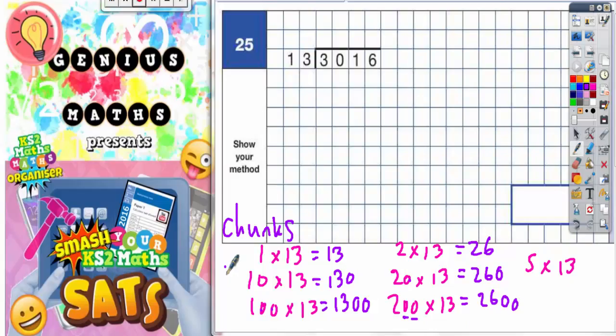5 lots of 13 is going to be half of whatever 10×13 is, because 5 is half of 10. So half of 10×13 is half of 130. Half of 100 is 50, and half of 30 is 15. Put your 50 and 15 together, that makes 65, so 5×13 is 65.